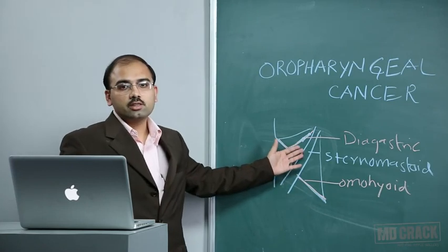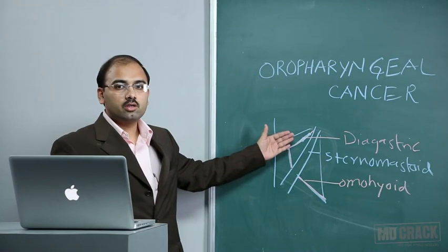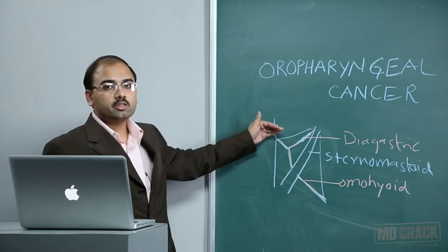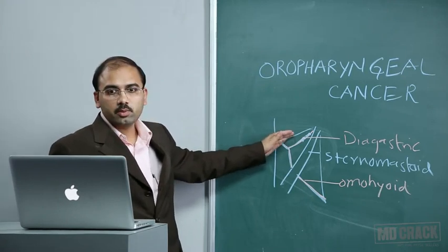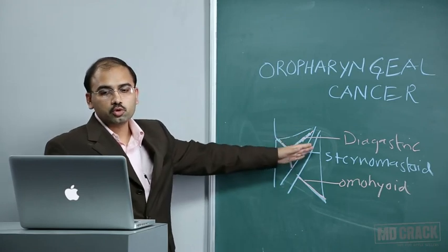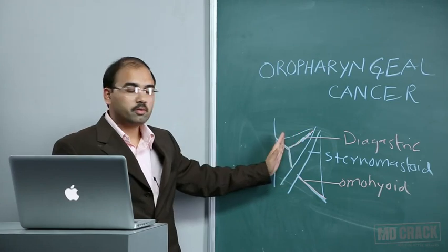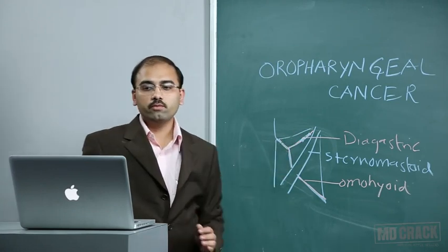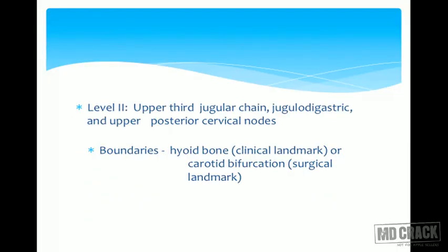Level 1 lymph nodes are submental and submandibular, within the digastric muscle triangle. Level 2 nodes are the upper jugular chain — the jugulo-digastric group — with the hyoid bone as clinical marker and carotid bifurcation as surgical landmark. Level 3 nodes are the middle jugular nodes, from the inferior border of level 2 to the cricothyroid notch, along the omohyoid muscle. Level 4 nodes are the lower jugular nodes, from the omohyoid muscle to the clavicle.